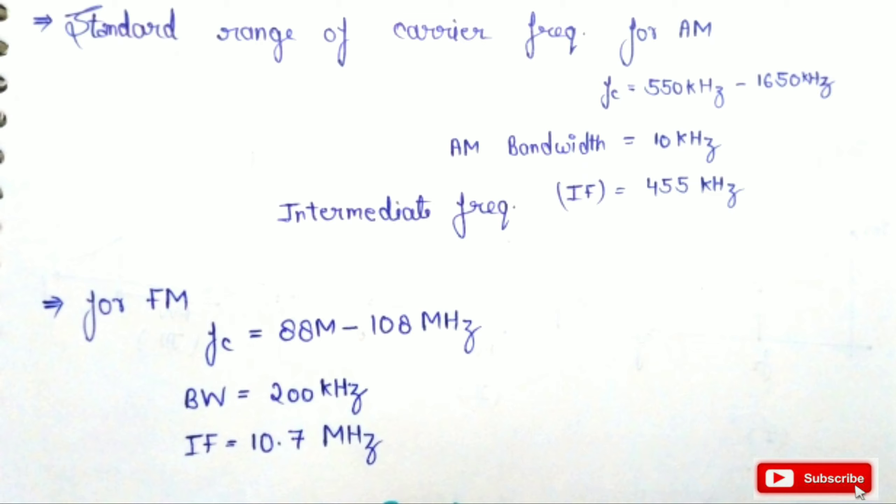These are some frequency limits that are set up by the FCC. FCC stands for Federal Communication Commission, and it is the international body that sets up the limits for communication. The standard range of the carrier frequency for amplitude modulation is given by 550 kHz to 1650 kHz.